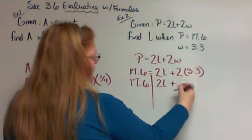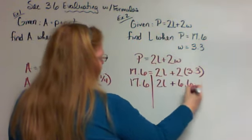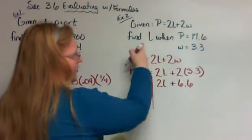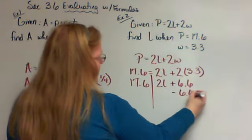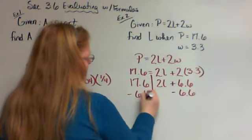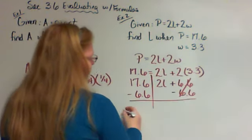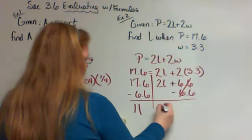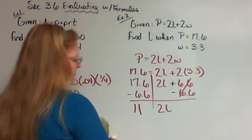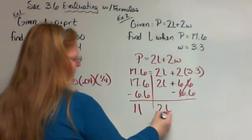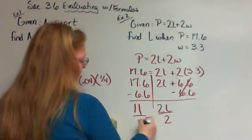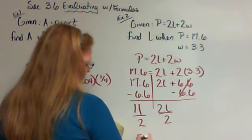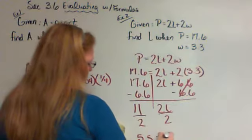I'm trying to get L by itself because L is what we're looking for. So I'm going to subtract 6.6 from both sides and get 11 equals 2L. Then I still need to get the 2 away, so I divide both sides by 2 and get 5.5 equals L.